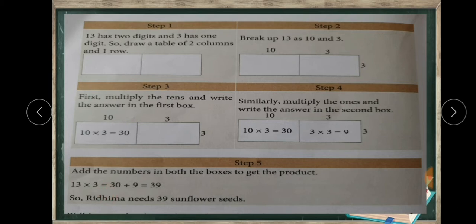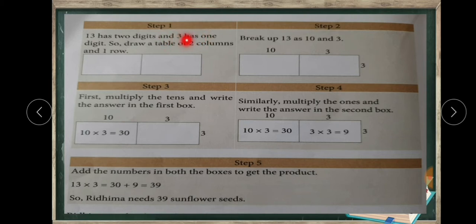To do multiplication in the box method, we have to draw a box. Here we are drawing two columns only, because we have the number 13 — it has two digits — and 3, the multiplier, has only one digit. So one number has two digits and the multiplier has one digit. For the multiplicand 13, we draw two columns, and since the multiplier is a one-digit number, we need only one row.